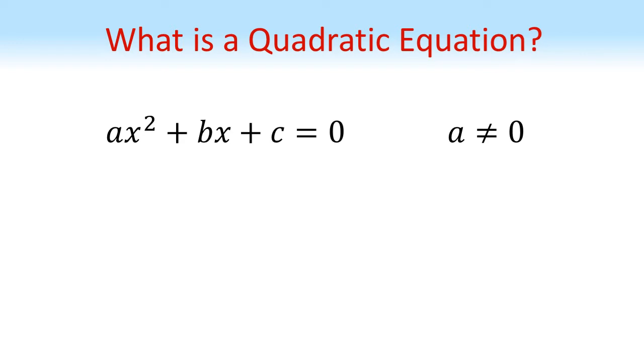One way to find these solutions is to use the quadratic formula, which is x equals minus b plus or minus the square root of b squared minus 4ac, all over 2a.